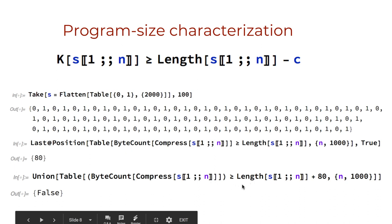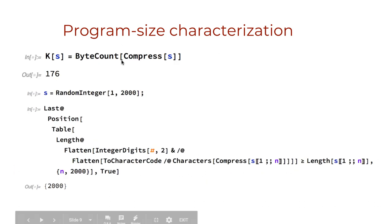Now by adding the constant 80, all compressed initial segments are shorter than the initial segments. And 176 bits is an upper bound of the algorithmic complexity for this sequence. For a random sequence, no such constant can be found. Here is illustrated with a pseudo-random string of 2000 bits.